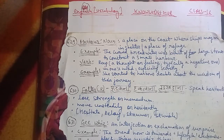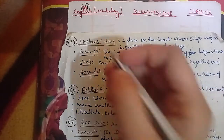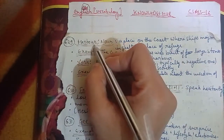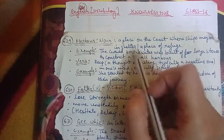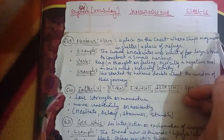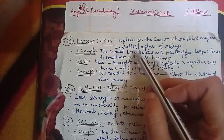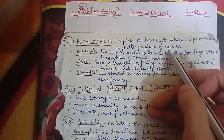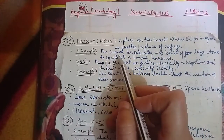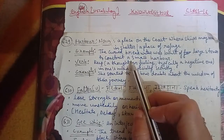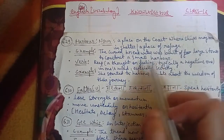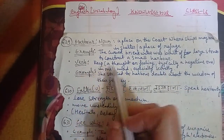So here we go ahead. The word of the session is 'harbour'. The 629th word we have is 'harbour'. When used as a noun, it is a place on the coast where ships may moor — it is a shelter and a place of refuge. Example: the curved breakwater was built of large stones to construct a small harbour.